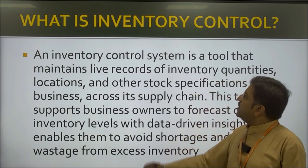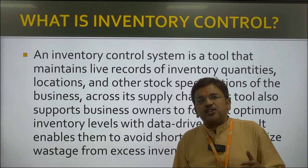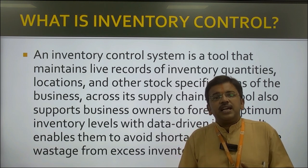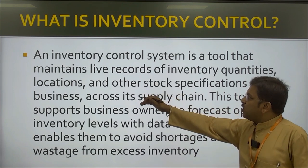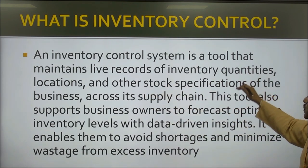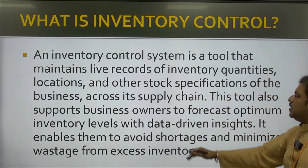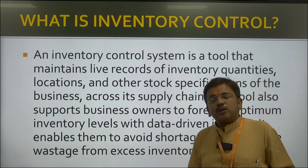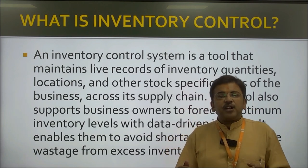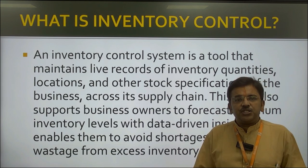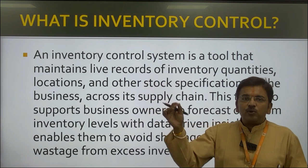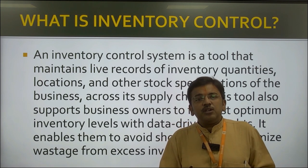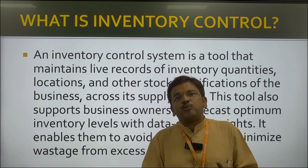Here we are going to deal with inventory. In simple terms, inventory is the raw material — something which we take for the processing activity to create finished goods. An inventory control system is a tool that maintains live records of inventory quantities, locations, and other stock specifications of the business across the supply chain. We maintain that database for the welfare of the organization — from where you get the inventory, how much is required, how it is processed, and at what time to reorder.